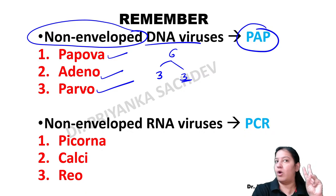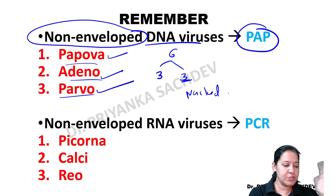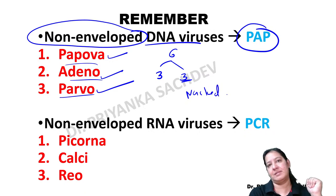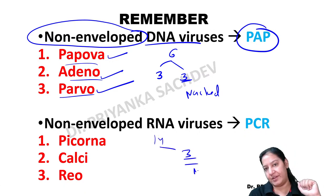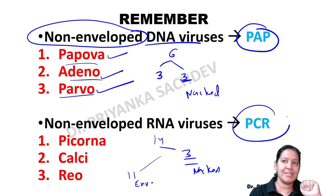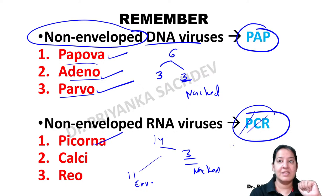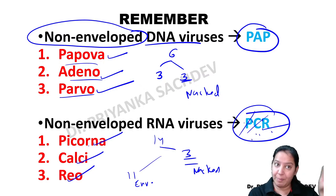The functions of envelope: it is susceptible to solvents like chloroform and ethers, which dissolve the envelope and kill the virus. It also confers antigenic, biological, and chemical properties to the virus. Among the 6 DNA viruses, three are enveloped and three are non-enveloped. The three non-enveloped (naked) DNA viruses have the mnemonic PAP: Parvo, Pepova, and Adeno. These three are naked - no envelope.